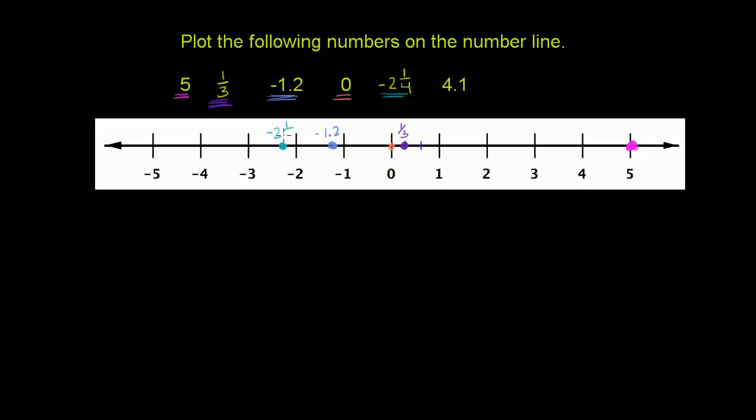And then finally we have 4.1. So 4 is right over here. 0.1 is another tenth greater than 4. Another tenth on the way to 5. So 4 and 1/10 is going to be right over here. 4.1. And we are done.